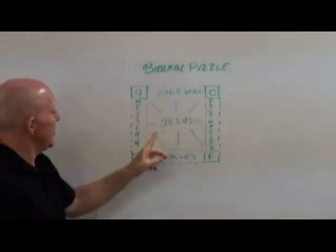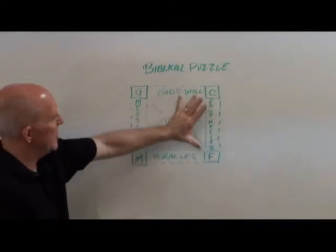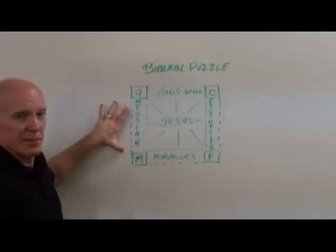We've got the corner pieces: God, creation, man, the fall. We have the side pieces of God's will, prophecies, miracles, and the Messiah.